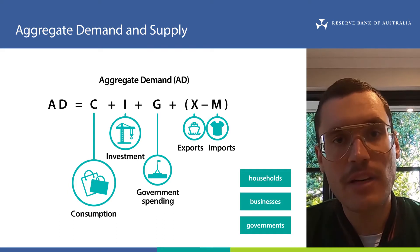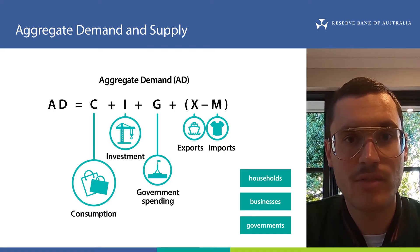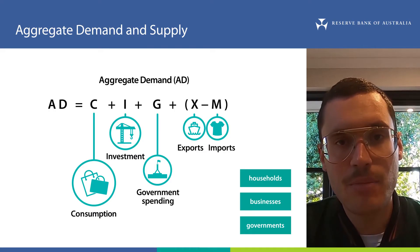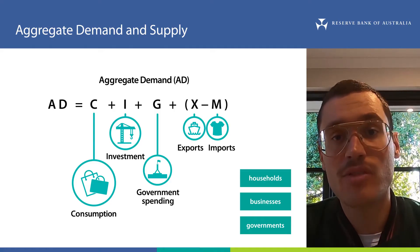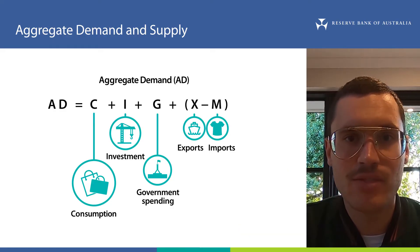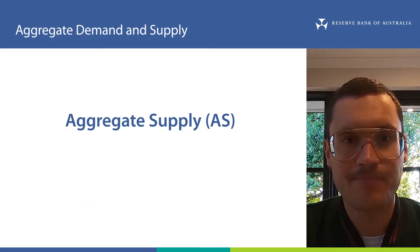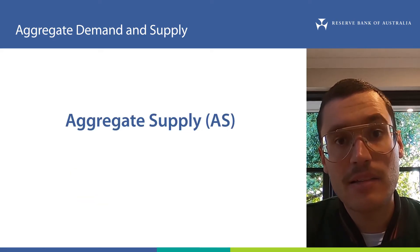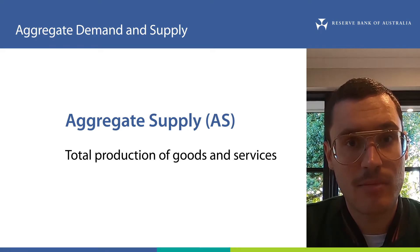Exports are foreign households, businesses and governments purchasing Australian goods and services, and imports are Australian households, businesses and governments purchasing foreign goods and services. Someone has to supply these goods and services, and this is where aggregate supply comes in.